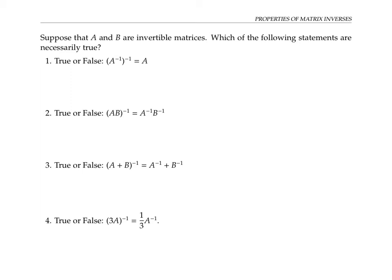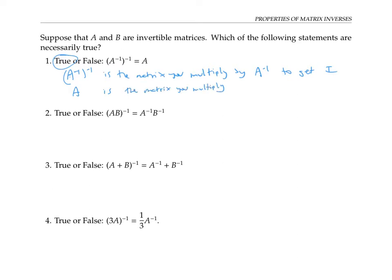Let's start with statement one. Is it true that the inverse of A inverse is A? Yes, that's definitely true. Because A inverse inverse is the matrix you multiply by A inverse to get the identity matrix. But A is also the matrix that you multiply by A inverse to get I. And since inverses are unique, A must equal A inverse inverse.